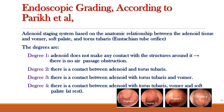In this slide I will talk about the endoscopic grading system, and this is according to Parikh et al. According to Parikh et al., the adenoid staging system is based on the anatomic relationship between adenoid tissue and its surrounding structures, like the torus tubarius — which is also known as the Eustachian tube orifice — and the soft palate.